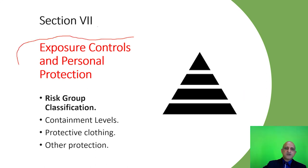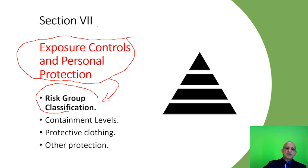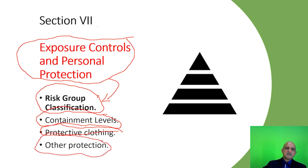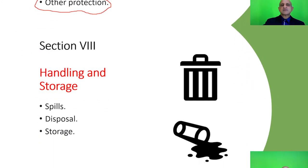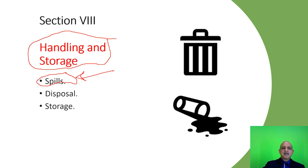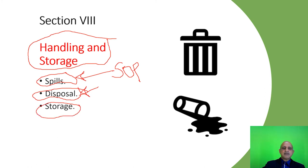Section 7 focuses on exposure control and personal protection. We must identify the risk group — risk group 1 to 4 — the level of containment currently available or required, and the PPEs, protective clothing, and other protection required for the biological agent. Section 8 focuses on handling and storage of the pathogen, encompassing spills in the laboratory which may pose a risk to laboratory personnel. Appropriate SOPs must be available to address spills, and there are also guidelines on disposal of the biological agent after completion of laboratory processes.